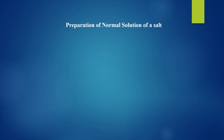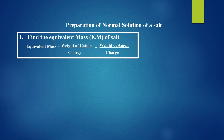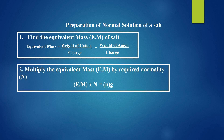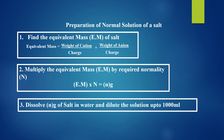In this video we will learn in detail with examples the preparation of normal solution of salts. To prepare a normal solution of any salt, always follow these three steps: first, find out the equivalent mass of the salt by finding equivalent masses of cation and anion individually, dividing mass by their charges, then adding them. Then multiply the equivalent mass by the required normality, take the resulting mass of salt, dissolve it in water, and dilute the solution up to 1000 milliliters.